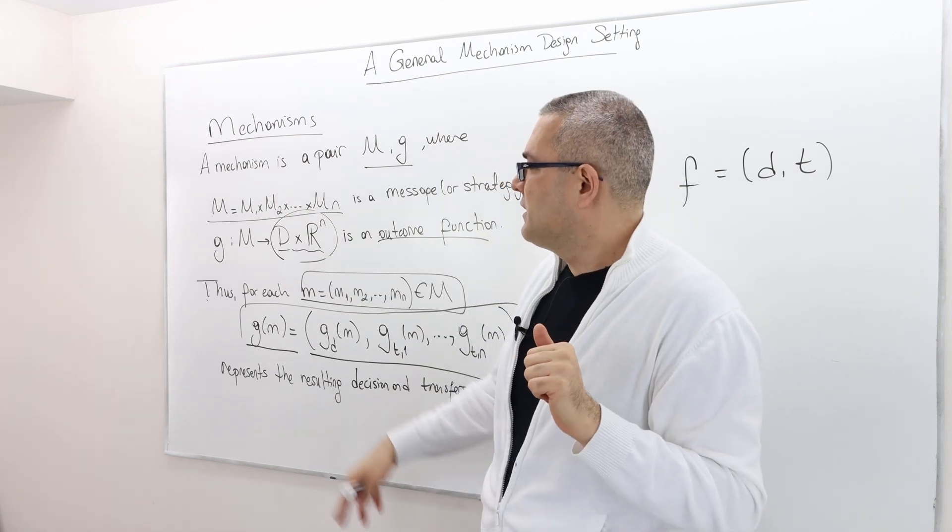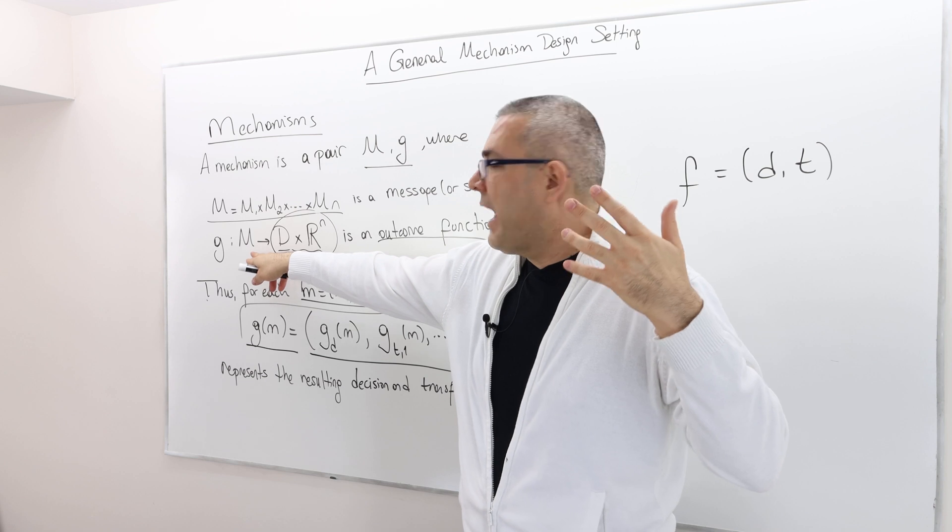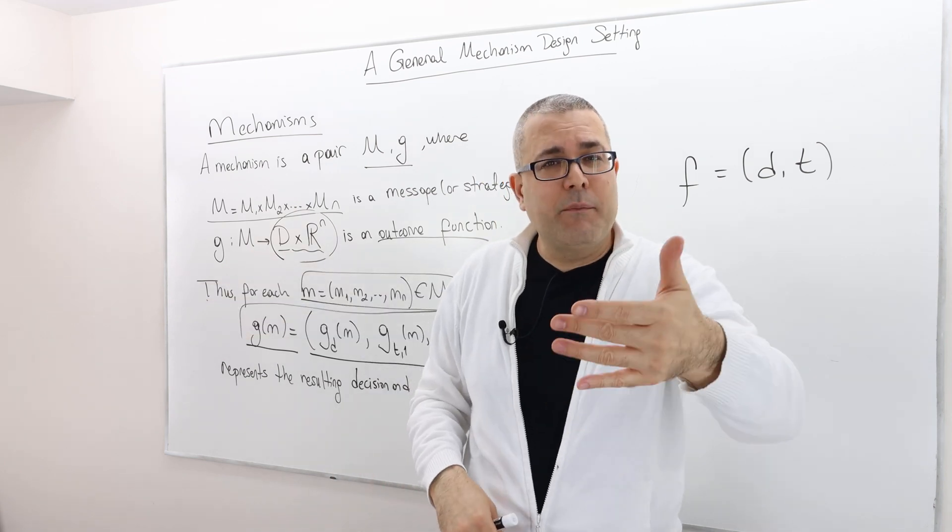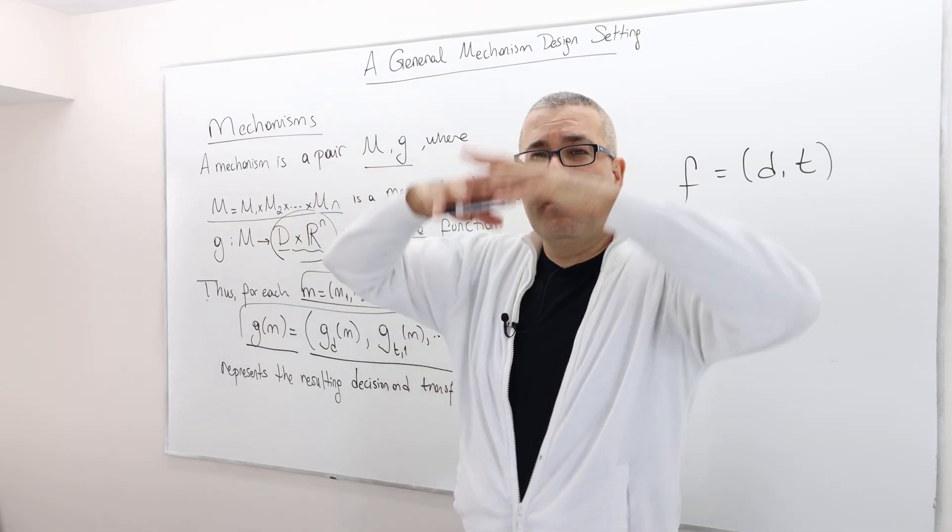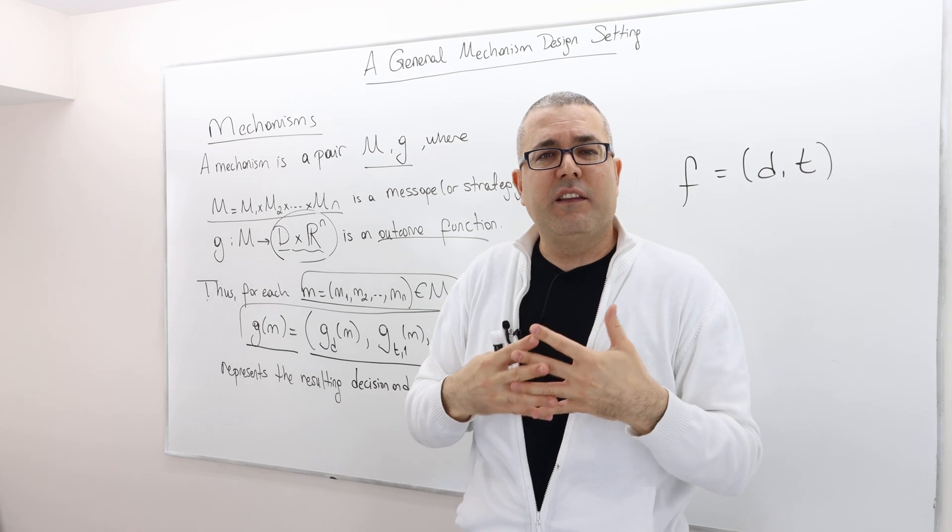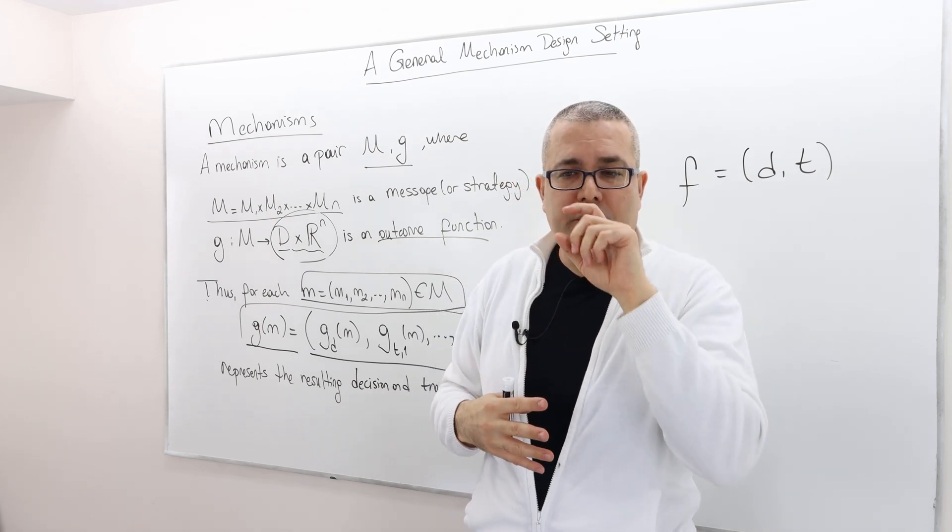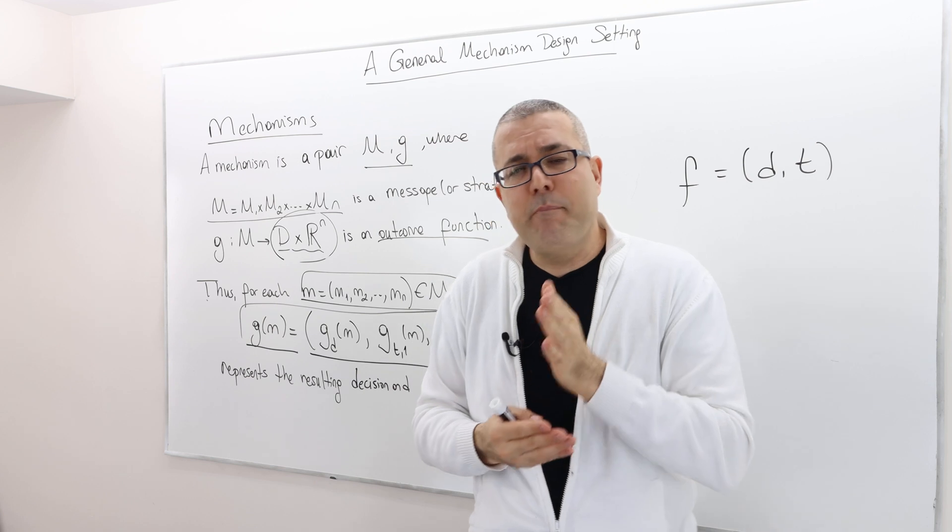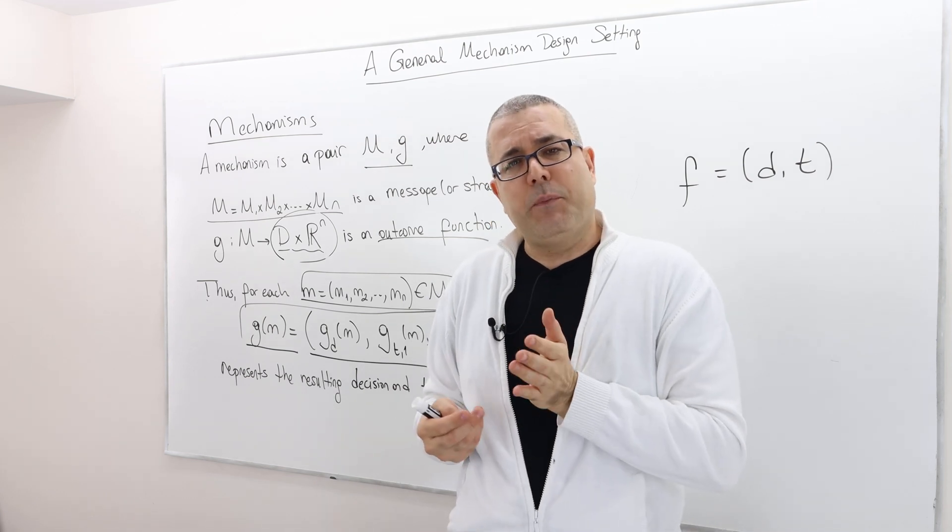But in the auction environment, for example, so M is the bids, right? I mean, this is why we needed a very generic description. So in the first price auction, for example, the mechanism doesn't ask people what is your true value?